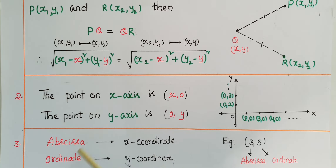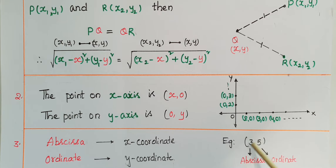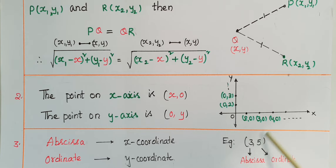Abscissa means x-coordinate and ordinate means y-coordinate. For example, for the point (3, 5), these are the x and y coordinates. So here 3 is called the abscissa and 5 is the ordinate.